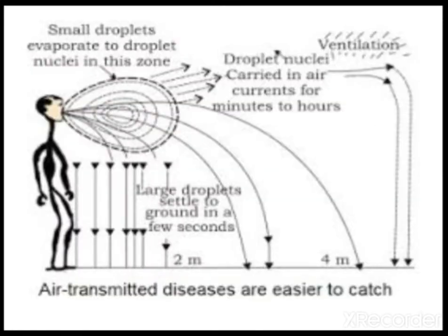Air droplets — how are they spread from one person to another? When a person coughs, small droplets evaporate and travel far away because small droplets can be carried by air currents and remain floating in air for some time. Larger droplets will settle down in a few seconds. That is why small particles are more dangerous — they are carried for longer distances and remain for longer time.